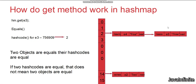One important note: if two objects are equal, their hash codes are always equal. However, the reverse is not always true — equal hash codes do not guarantee that both objects are equal. Sometimes two different objects can have the same hash code (hash collision), but they are not equal. This is a key point to understand when working with HashMap.